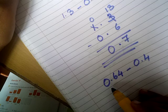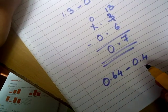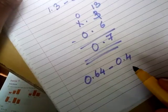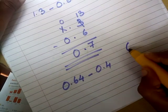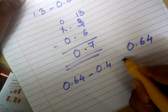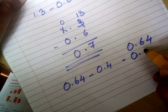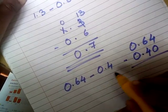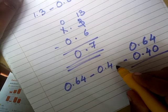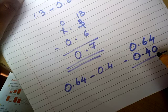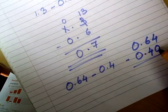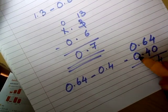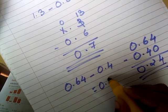Now look at this: 0.64 minus 0.4. Both are unlike decimals, so when you place the digits, make them like decimals first. 0.64, and 0.4 becomes 0.40, with 4 in the tenths place and 0 in the hundredths place. Now both are like decimals. Subtract: 4 minus 0 is 4, 6 minus 4 is 2, insert the decimal point, and 0 minus 0 is 0. So the answer is 0.24.